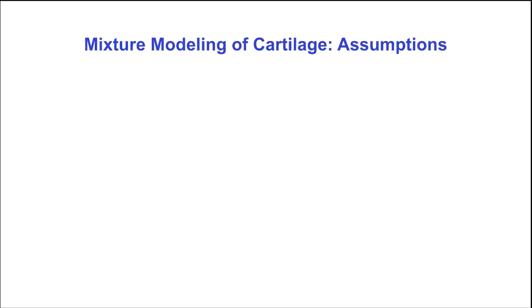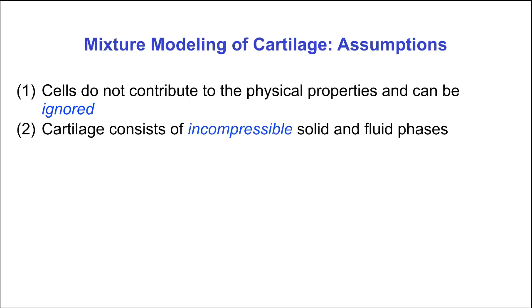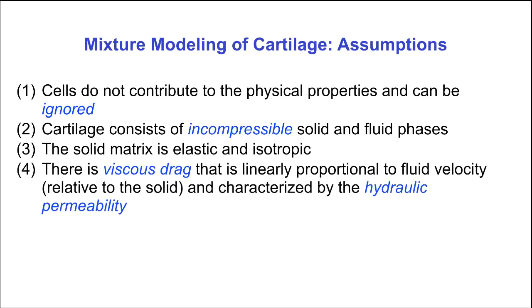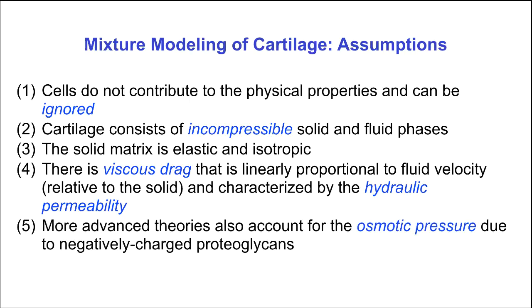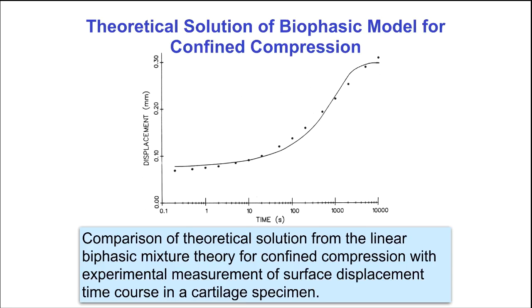One popular way to model cartilage mechanical properties is to use a so-called mixture theory model. The basic assumptions are that cells do not contribute to physical properties and can be ignored; the cartilage consists of incompressible solid and fluid phases; the solid matrix is elastic and typically isotropic; there is viscous drag linearly proportional to the fluid velocity relative to the solid, characterized by the hydraulic permeability. More advanced theories can also account for osmotic pressure due to negatively charged proteoglycans and can include electrical current flow and streaming potentials. This biphasic model prediction for creep during confined compression approximates experimental measurements quite well.